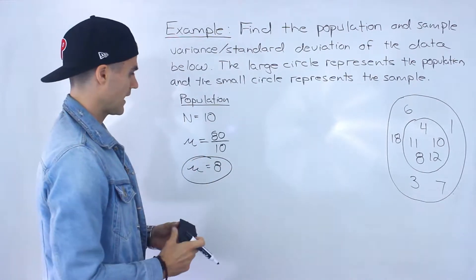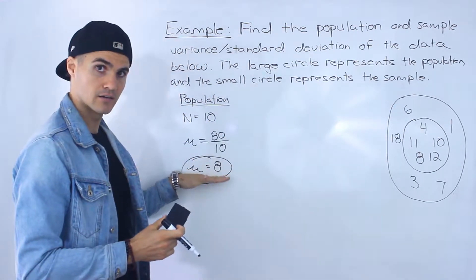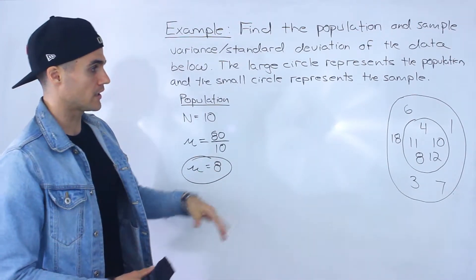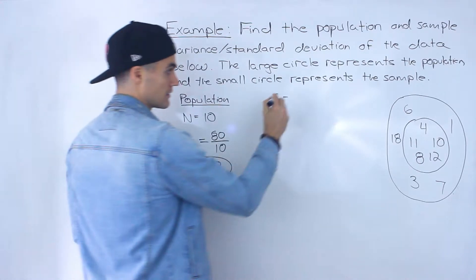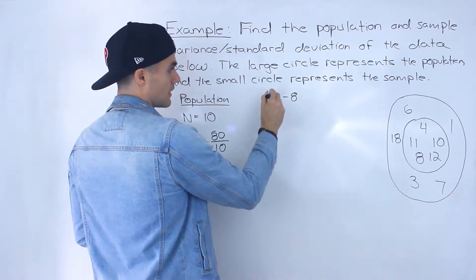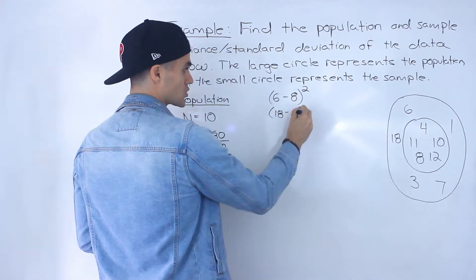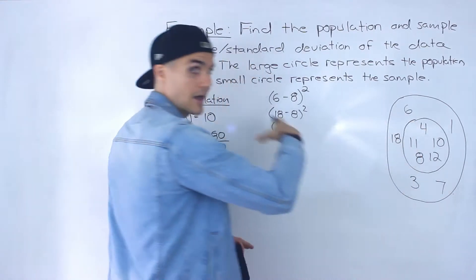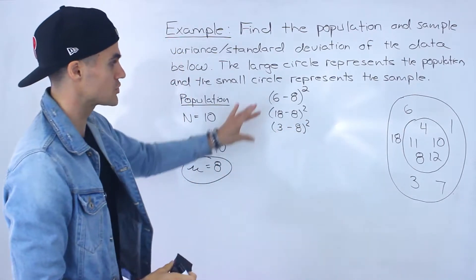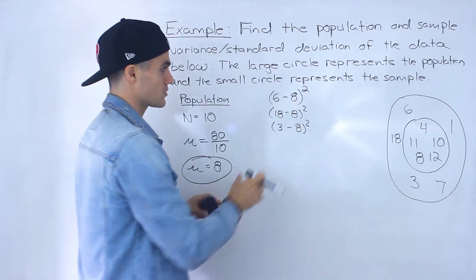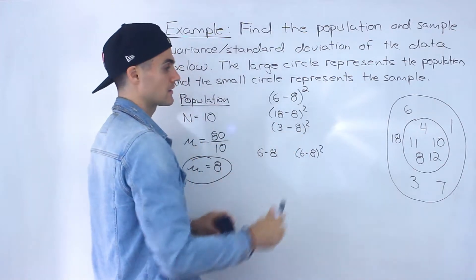What you do then is take that population mean and figure out how much each data point is deviating from it. So we take each data point — starting with 6 — subtract the population mean of 8, and square that deviation. Then 18 minus 8, squared; then 3 minus 8, squared. Some textbooks show deviations and squared deviations in two separate columns; I'm combining them into one step here.